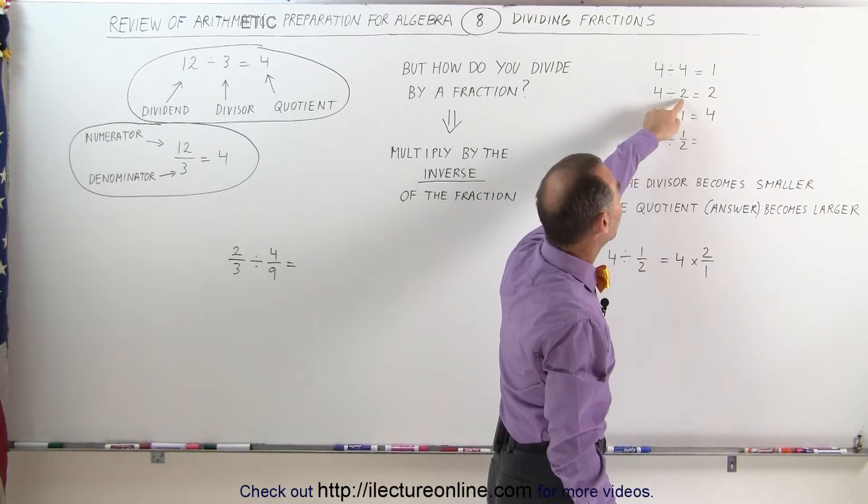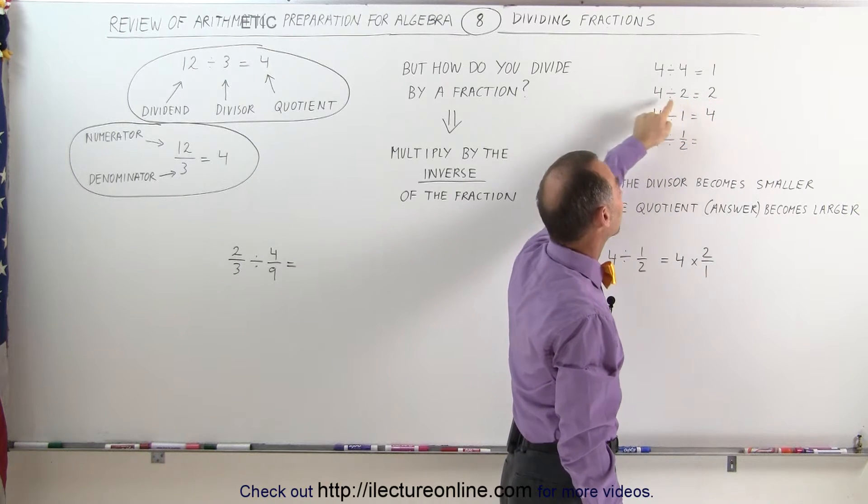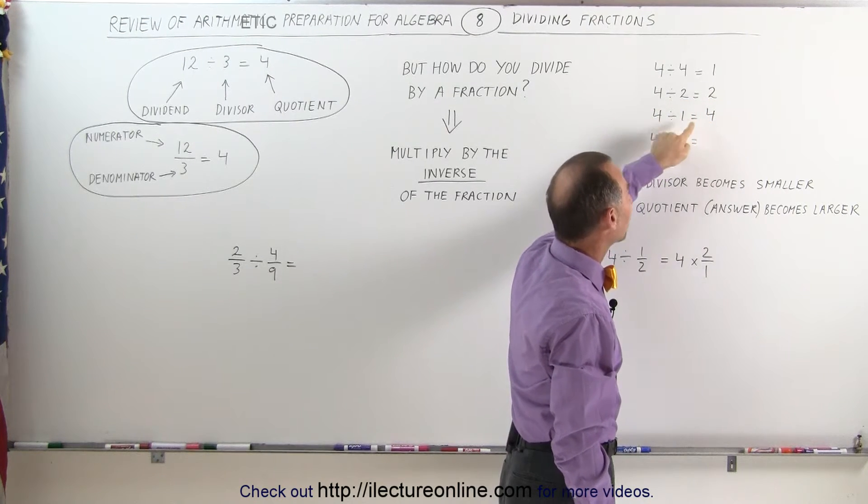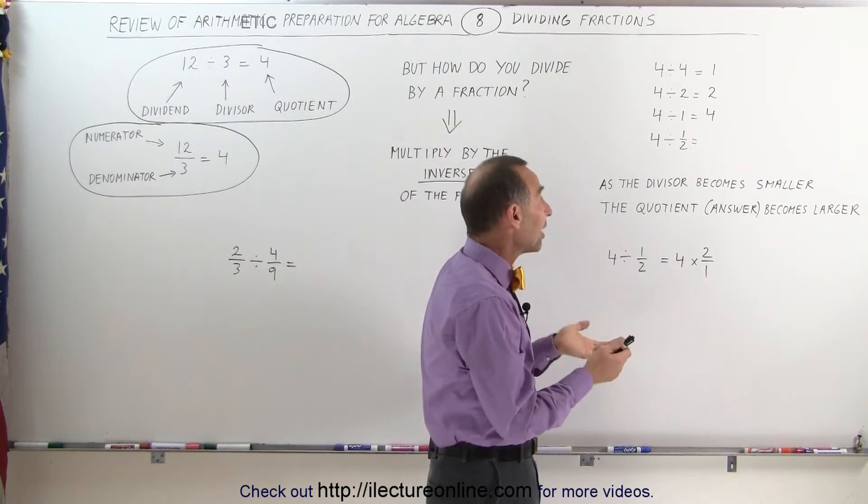Same when you divide 4 by 2. 4 divided by 2 is 2, because when you multiply 2 times 2, you get 4 again. 4 divided by 1 is 4, because 4 times 1 gives you 4. But what happens when you try to divide by a fraction?